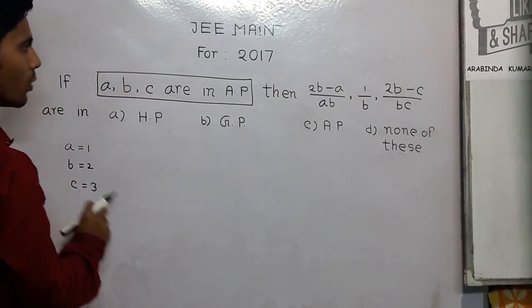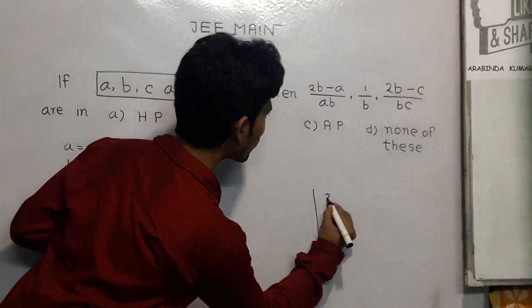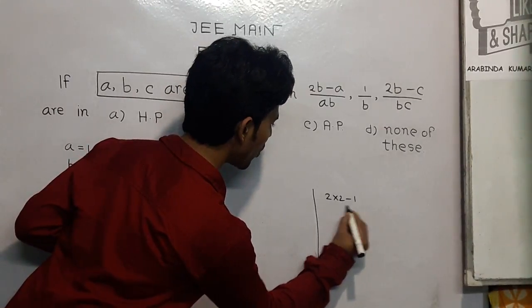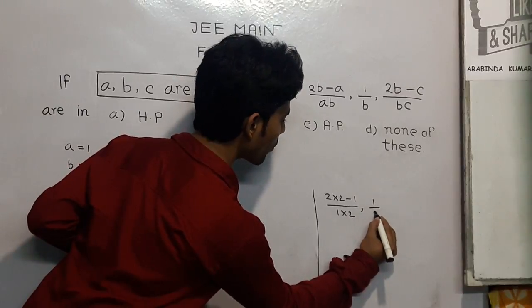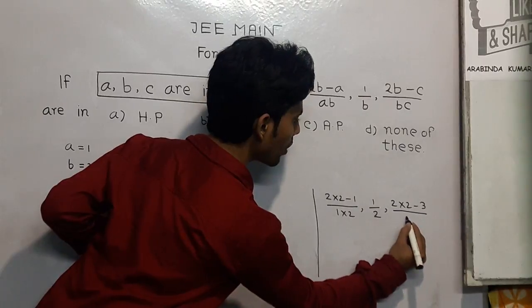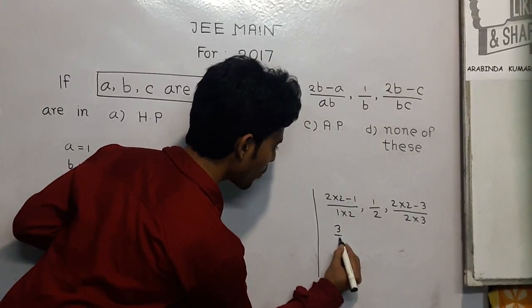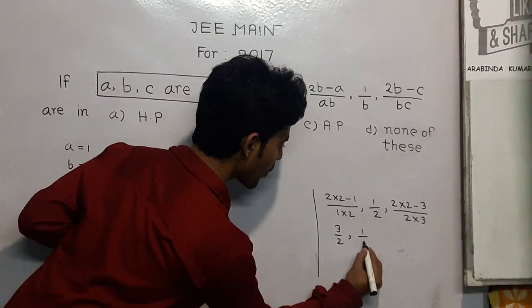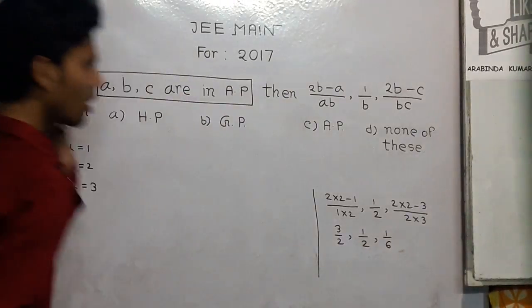Now, we put this value in here. We get 2 into 2 minus 1 upon 1 into 2, 1 upon 2, and 2 into 2 minus 3 upon 2 into 3. That is, 3 upon 2, 1 upon 2, and 1 upon 6.